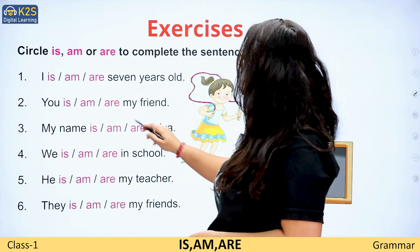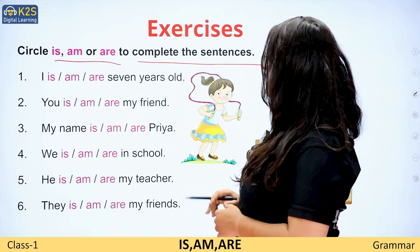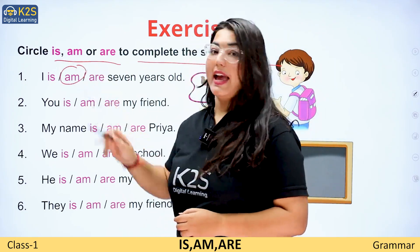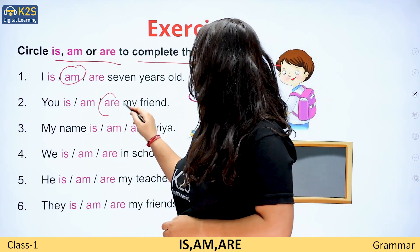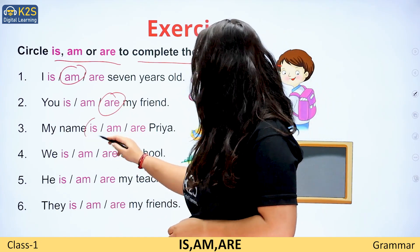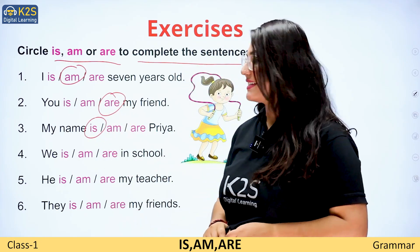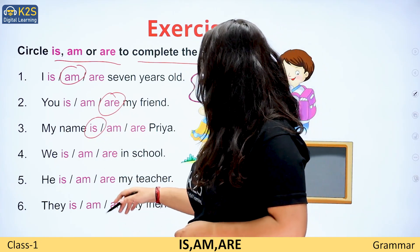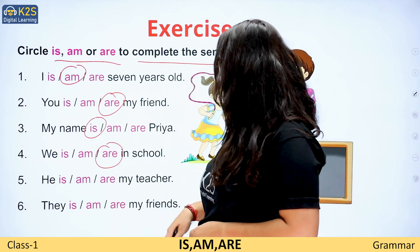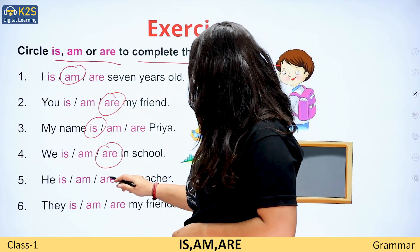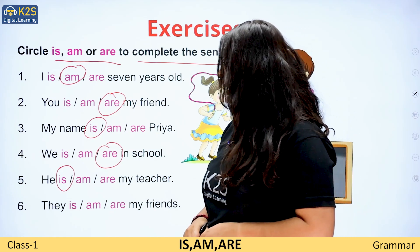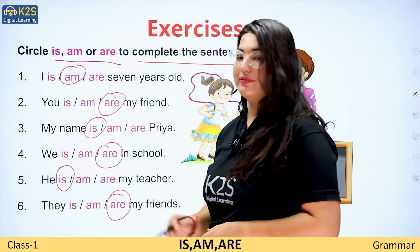Circle is, am, or are to complete the sentences: I am. You are. My name is. We are. He is. They are.